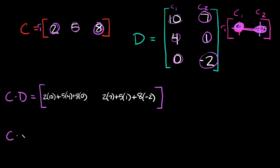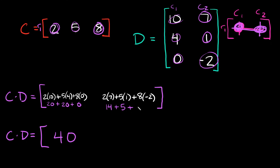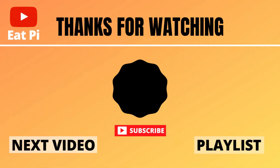So now we can simplify. Two times 10 is 20, plus five times four is 20, plus eight times zero is zero. So 20 plus 20 equals 40. And then two times seven is 14, plus five times one is five, plus eight times negative two is negative 16. So 14 plus five is 19, and 19 minus 16 equals three. So matrix C times matrix D would simply be this right here. If you found the video helpful, definitely leave a thumbs up, and if you have any other questions or want to see other examples, just let me know in the comment section below.